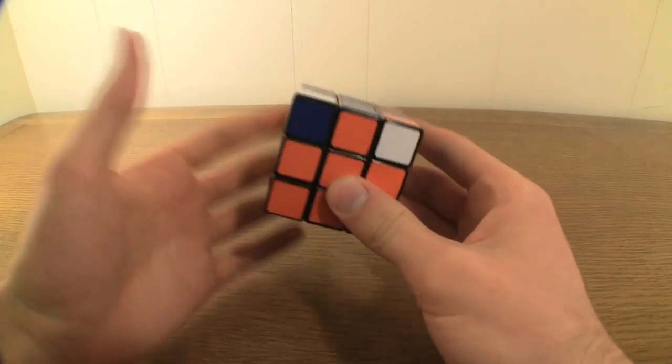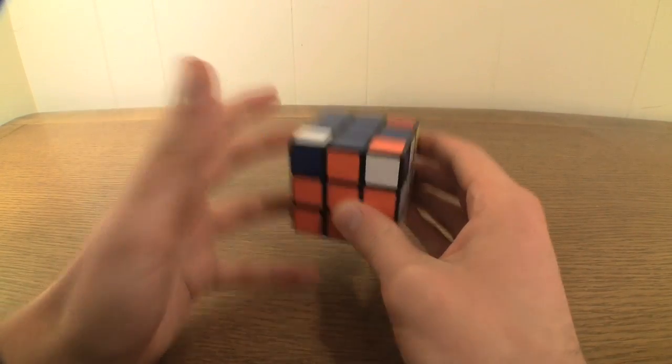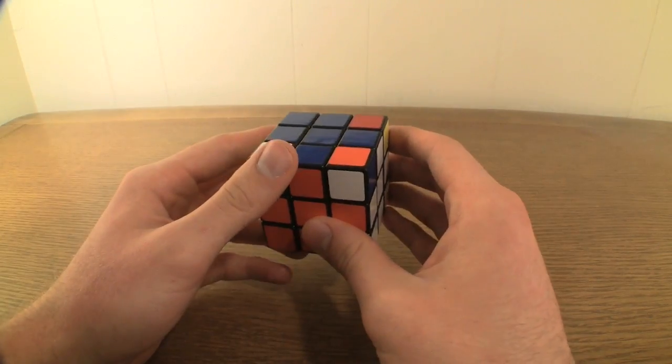You can tell whether or not a corner piece is in the correct place by looking at its three colors and the colors of the three sides surrounding it.